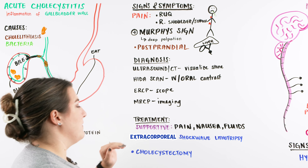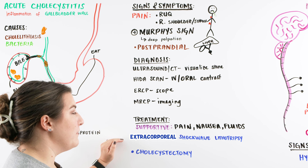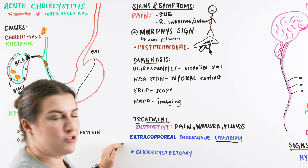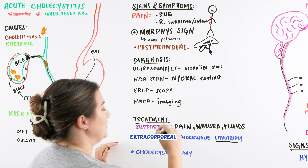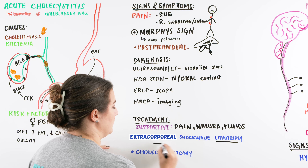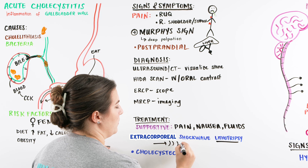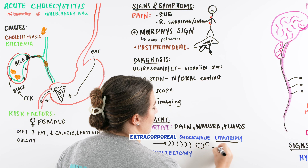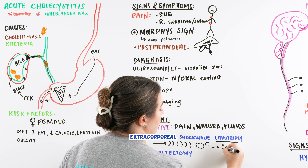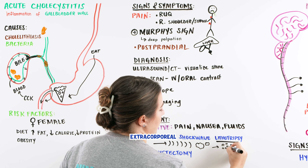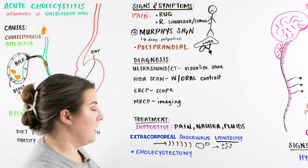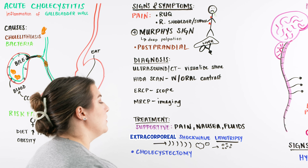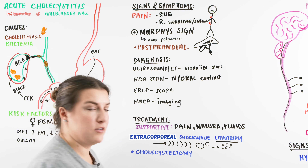They may also have a chance to go through extracorporeal shockwave lithotripsy. Lithotripsy is a neat procedure where we send shock waves to the stones and try to bust them up into little pieces. When we bust them into little pieces, they can pass through without blocking the lumen of the bile duct, so bile isn't backflowing and we have that nice flow needed to get bile out.